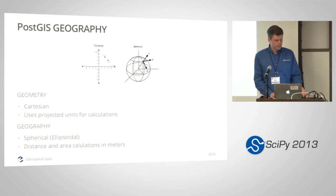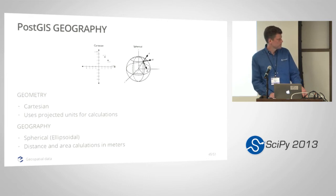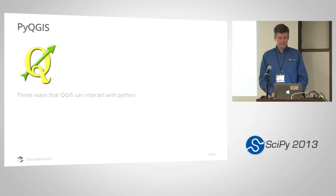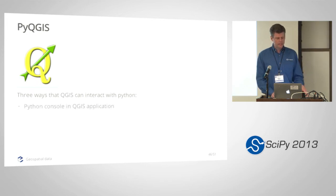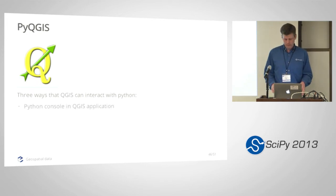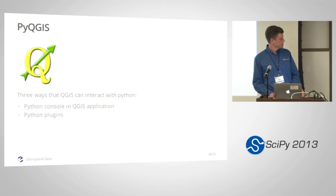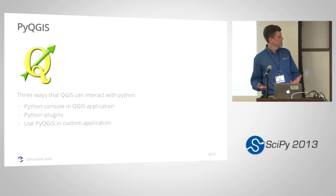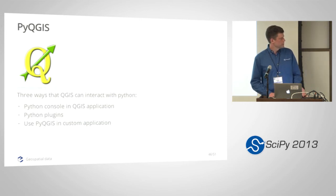If you want to do those kinds of geography calculations outside of PostGIS, you can use GeographicLib as a library that does that. Also worth mentioning: PyQGIS - QGIS has a Python console you can call up. You can write Python plug-ins for QGIS, and you can use PyQGIS functions within QGIS's capabilities in an outside Python application. So you can interact between Python and QGIS in all three of those kinds of ways.